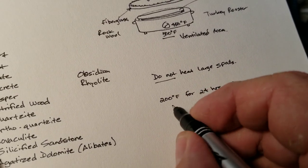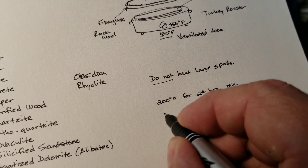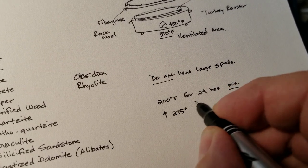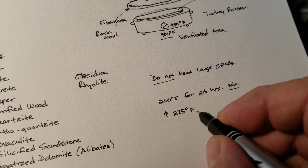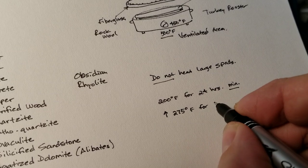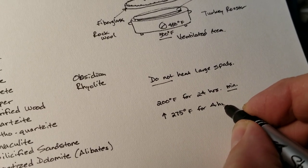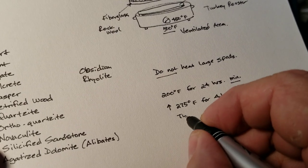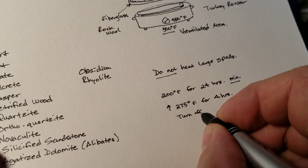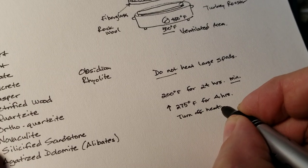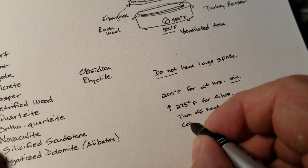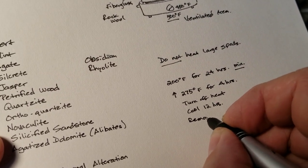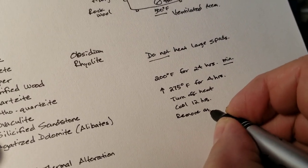So you put the rocks in, heat at 200 degrees for 24 hours, and then you increase the heat to 275 degrees Fahrenheit for four hours, and then turn off the heat. Cool for 12 hours. Remove and nap.